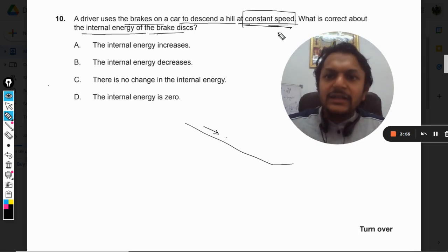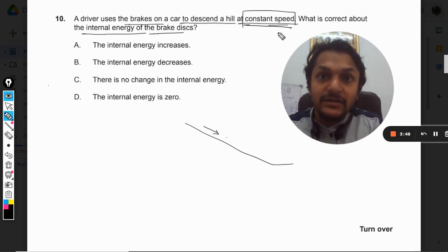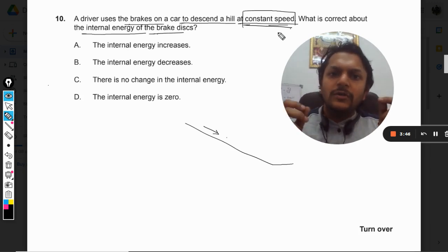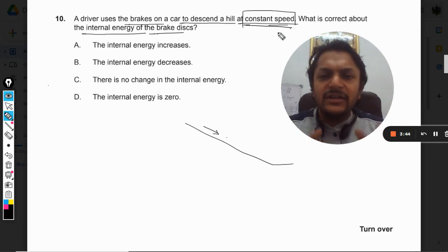Now where is that heat going? That heat is being absorbed by the material with which the brakes are made - by the plastic or by the metal. So whatever the material, that material is getting heated up.